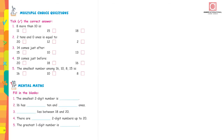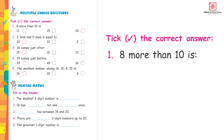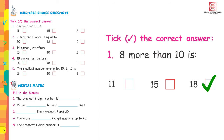This is reinforcement in the form of multiple choice questions. Let's do the first one together. 8 more than 10 — is it 11, 15, or 18? That means start counting after 10: 11, 12, 13, 14, 15, 16, 17, 18. So 8 more than 10 is 18. Circle or tick the correct option.